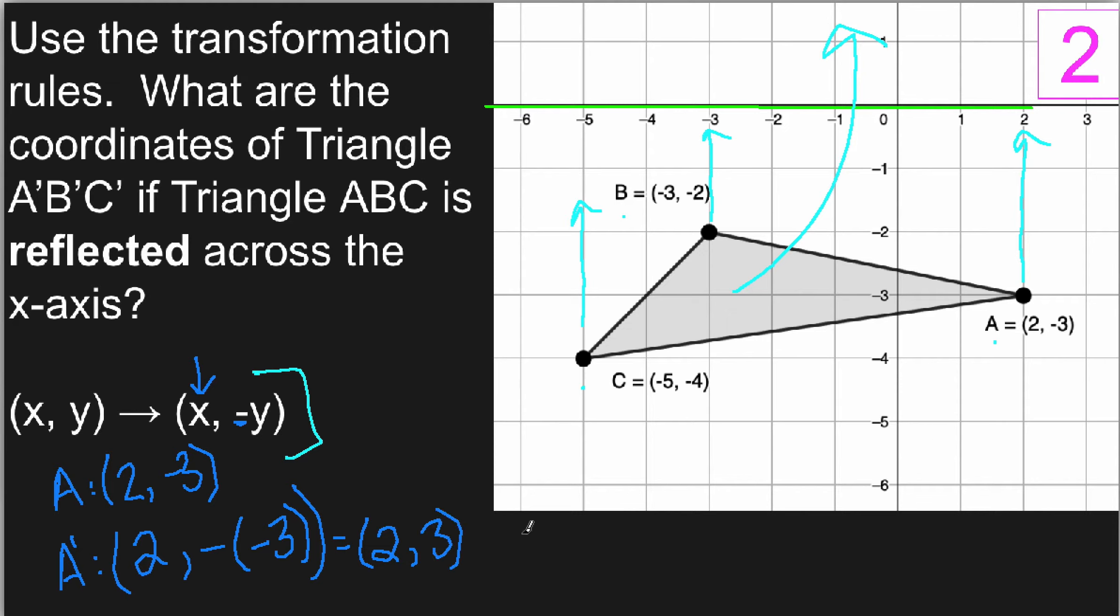For B, B is located at negative 3, negative 2. This means B prime will be located at the same x value. So negative 3 will stay the same, but I want the opposite of the y value. So that means B prime is located at negative 3, positive 2.